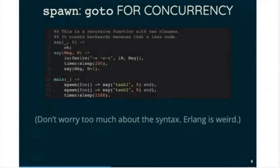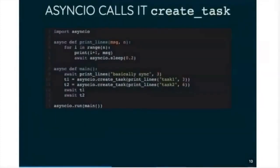Async.io, which is the standard library concurrency async framework for Python, calls it createTask instead of spawn. So here's the previous, the equivalent of the Erlang program written using async.io. So we have the function that prints the message every 200 milliseconds, sleeping in between.